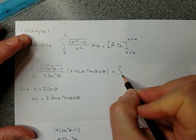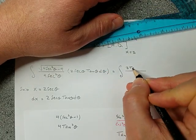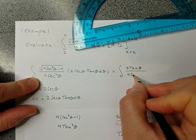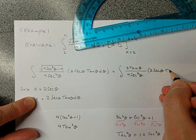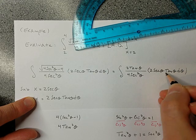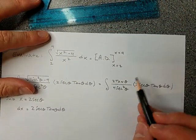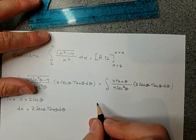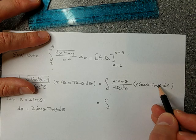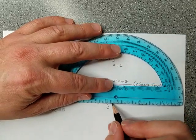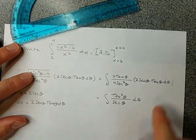Updating the integral: under the root we have 2 tangent, in the denominator x squared becomes 4 secant squared theta, and the differential part is 2 secant theta tangent theta d theta. Some things obviously cancel — the 2s give a 4 on top and 4 on the bottom, and we can cancel one secant. Consolidating everything, we get tangent squared theta over secant theta d theta.